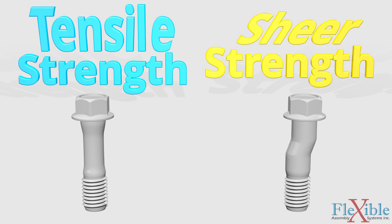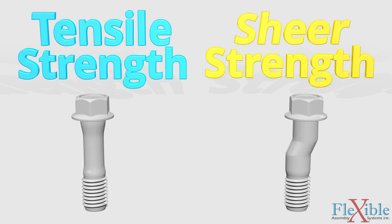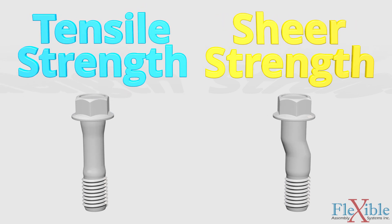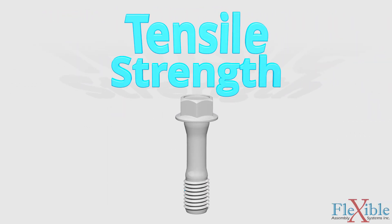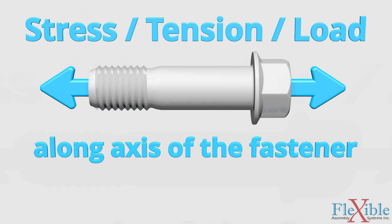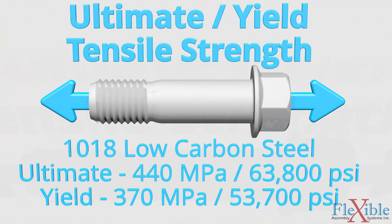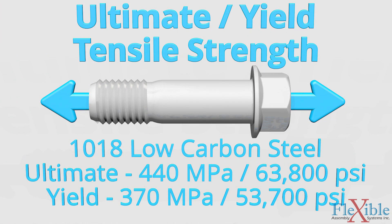When picking a fastener there are two important mechanical properties you should be aware of: its tensile strength and its shear strength. We will focus on tensile strength for this video. The ultimate tensile strength of a threaded fastener is the amount of stress it can support along its axis before failing completely. Its yield strength is the amount of stress it can support before permanent deformation. Tensile strength relies on the material the fastener is made from and is measured in megapascal or pounds per square inch.